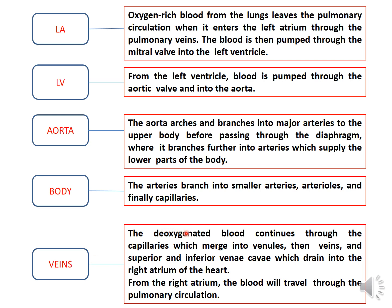The deoxygenated blood continues through the capillaries, which merge into venules. All the capillaries, after deoxygenation, merge into venules and then unite to form veins. These veins further unite with the superior and inferior vena cava, which drain into the right atrium of the heart. From the right atrium, the blood will travel through pulmonary circulation.